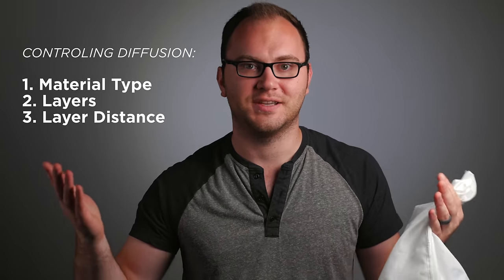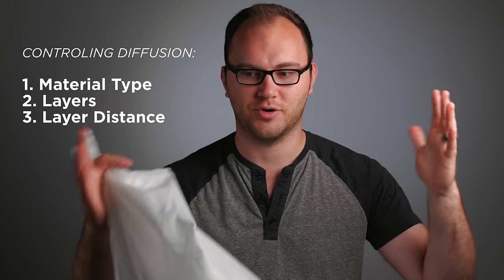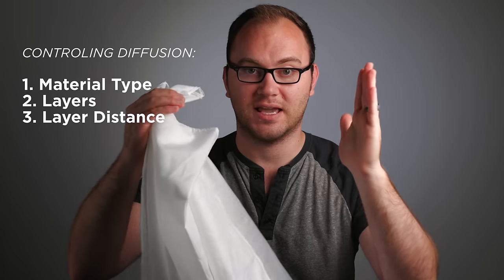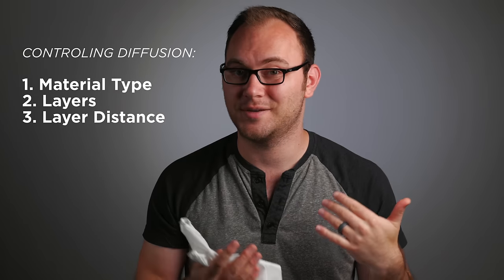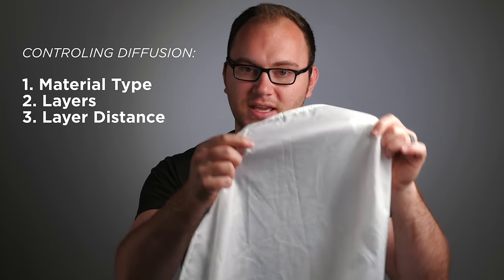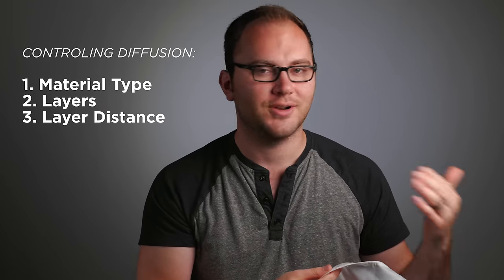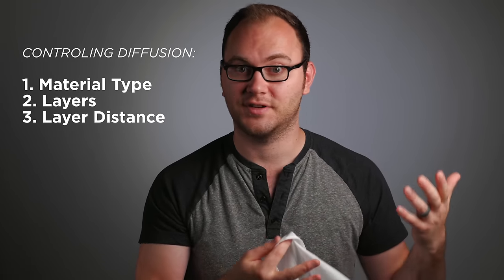And that's why soft boxes exist. You notice that often they're pretty bulky. The reason is there needs to be distance between the light source and the actual diffusion for it to be more effective. If you just take some kind of diffusion material and put it directly on the light source, you're not going to get the same level of softness.